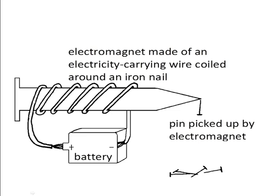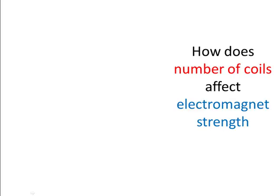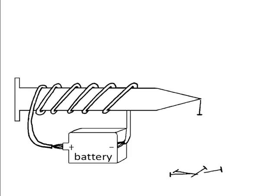In this investigation, we were asking how does number of coils affect electromagnet strength? We use the number of pins picked up by an electromagnet as an indicator of its strength. Here's a problem. Because you can only get pins in whole numbers, you don't get half pins or quarter pins, and so you lose some precision in the data because of that.